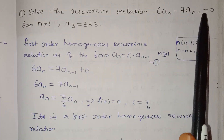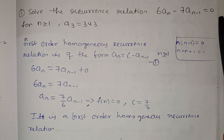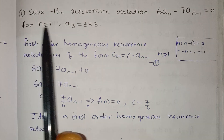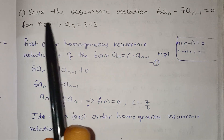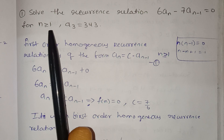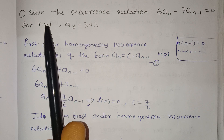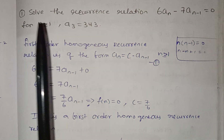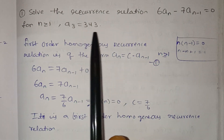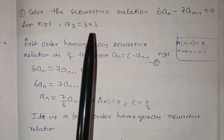We have the recurrence relation 6aₙ − 7aₙ₋₁ = 0. Since f(n) = 0, we call this a homogeneous recurrence relation, with n ≥ 1. It is linear and first-order. So this is a first-order linear homogeneous recurrence relation. Also given: a₃ = 343.